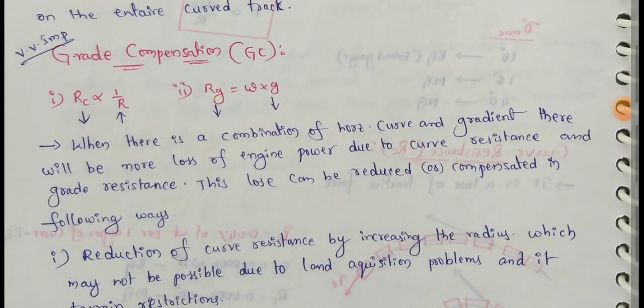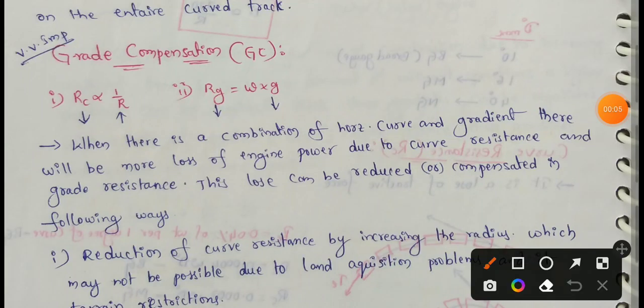Next topic — a very important topic: grade compensation on curves, abbreviated GC. To avoid resistance beyond the allowable limit, the gradients are reduced on curves, and this reduction in gradient is known as grade compensation for curves. The gradient in the curve will be reduced.